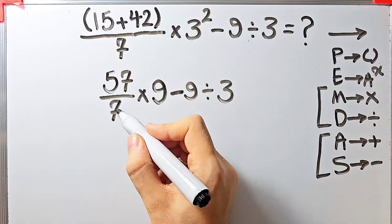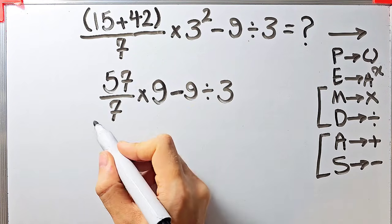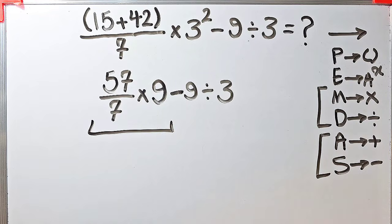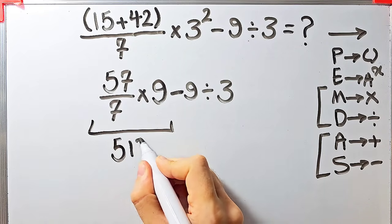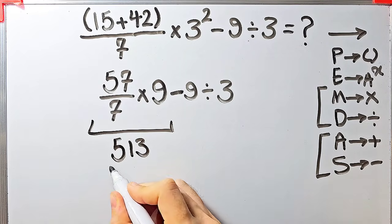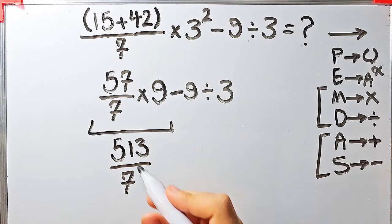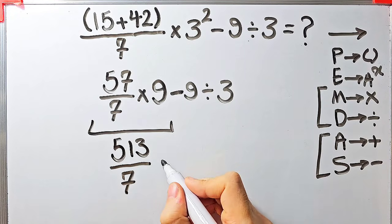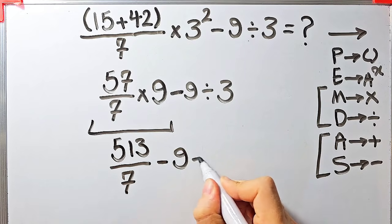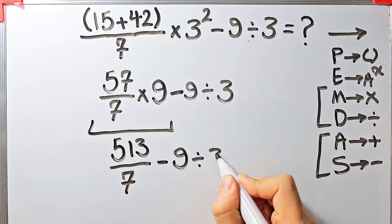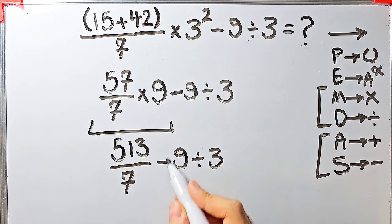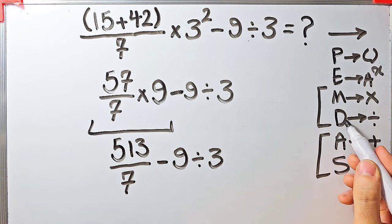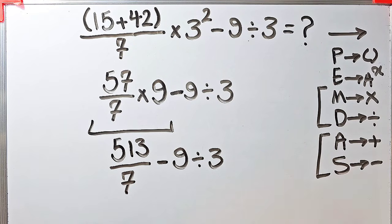Now we have 57 over 7, times 9, minus 9 divided by 3. We have multiplication, subtraction, and division. First we simplify the multiplication: 57 over 7 times 9 equals 513 over 7. Now the question is 513 over 7 minus 9 divided by 3.